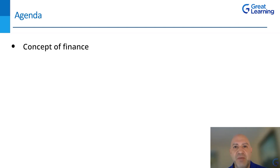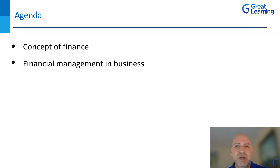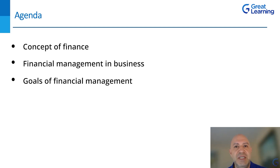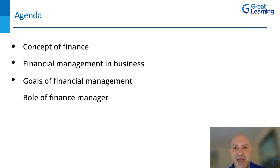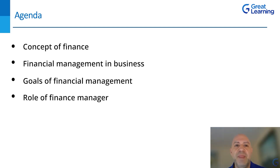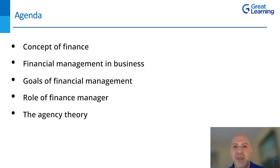We'll cover financial management and business — what do businesses do, what are their objectives, and what are they trying to handle. Then we'll talk about the goals of financial management. Every business needs a goal — profit maximization and other features. The role of the finance manager, the coordination, talking to different groups within the company and also externally. And the agency theory — we'll go into a little detail about that.